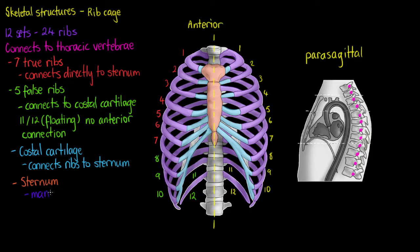The first part is the manubrium — the most superior part of the sternum, which I'm outlining here. I think of it as a kind of diamond shape, with the body being the next and largest part of our sternum, which I'm outlining now.